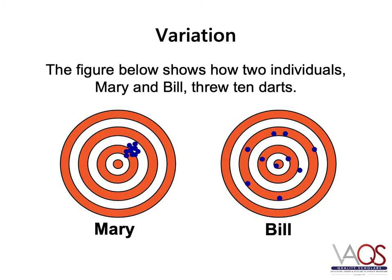Let's look at a conceptual example of variation. On this slide, we see the results of 10 darts thrown by Mary and Bill. As you can see, Mary's darts are all clustered together. Although she does not hit the bullseye, she has little variation. Bill hits the bullseye, but his darts are spread out across the target. For Mary to improve, she only has to adjust her throw down and to the left, and her darts should all be clustered at the bullseye. Bill has much more work to do to reduce his variation.